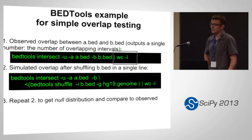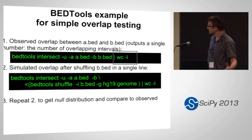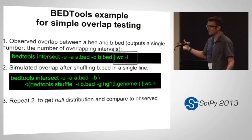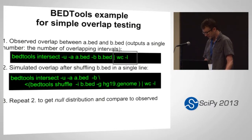Most of you know BedTools, actually written by Aaron, which basically allows you to quickly get the intersection of two files. In this example I'm showing A.bed and B.bed, and if you want to know the number of overlapping lines you just do WC-L. So that's what I would call the observed metric. And then if you want to know the simulated metric, for one of the files you can shuffle the intervals, and count the number of lines of overlap between A.bed and the shuffled intervals in B. In order to get the P-value — the likelihood of your observed occurring by chance — you just repeat that step. So this is ridiculously simple.